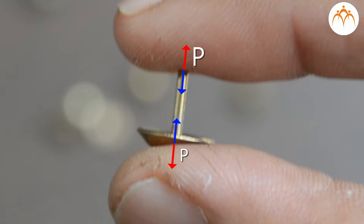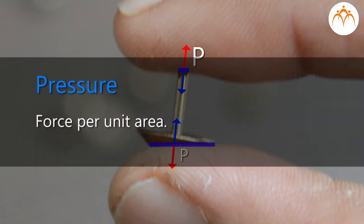Pressure at the pointed end of the pin is much greater than the pressure at the blunt end. This is because the area covered by the pointed end is much smaller than the blunt end. For the same force, pressure will be more at the pointed end than at the blunt end. Remember that pressure is the force per unit area.